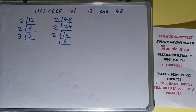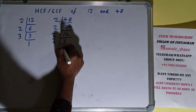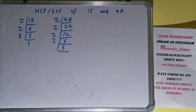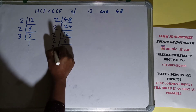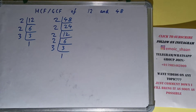Is this 6 divisible by 2? Yes, it is and we'll be having 3. Is this 3 divisible by 2? No, 3 is a prime number. So it is only divisible by itself and when we do so, we'll be having 1. So we are done with the prime factorization step.